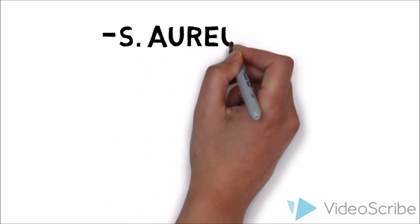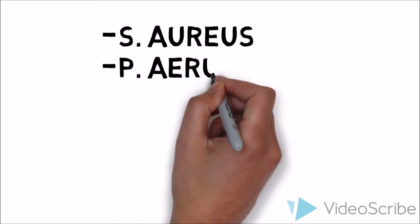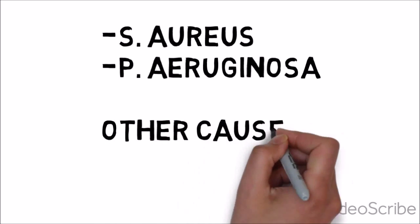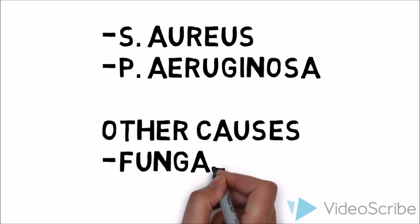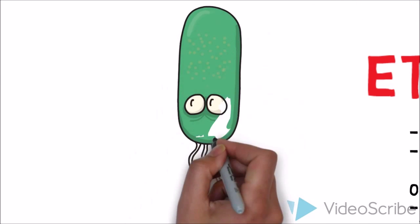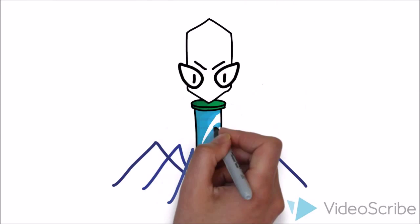Now let's look at some of the causes of bacterial keratitis. Staphylococcus aureus and Pseudomonas aeruginosa for contact lens wearers are the most common causes. Other causes are fungal and viral.